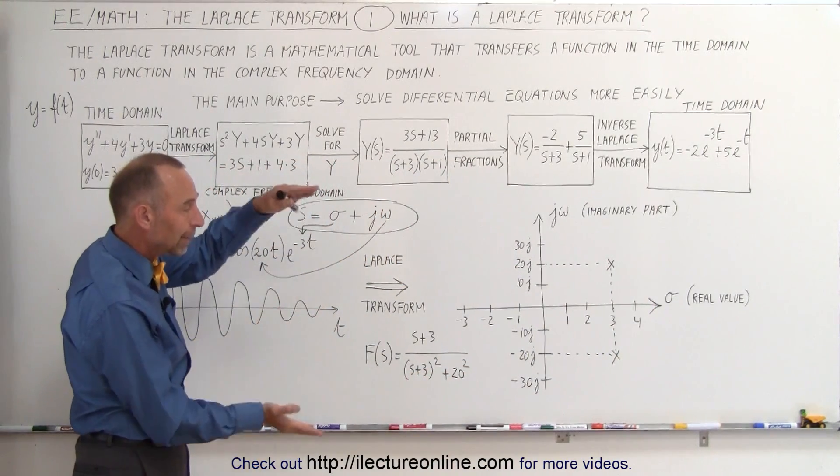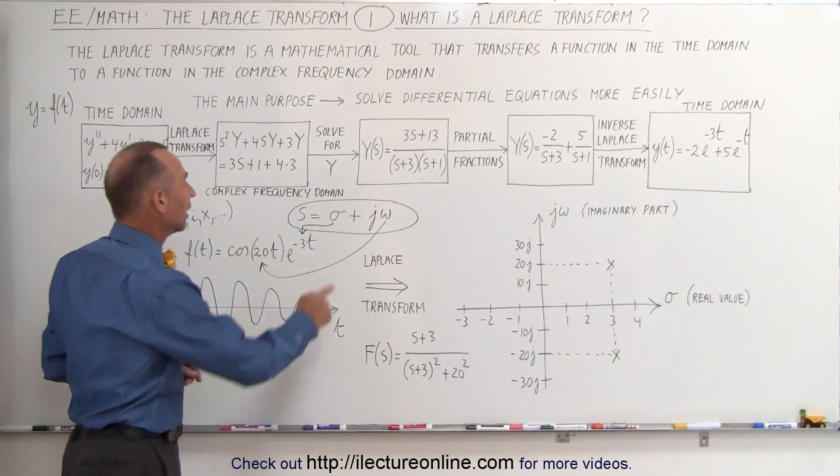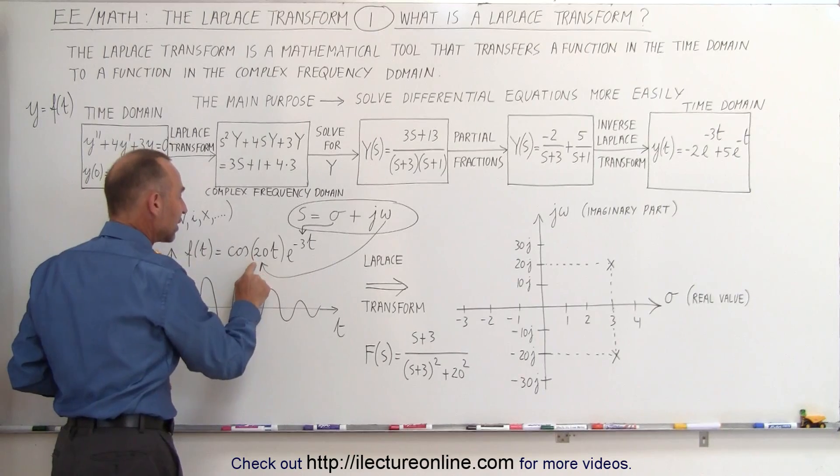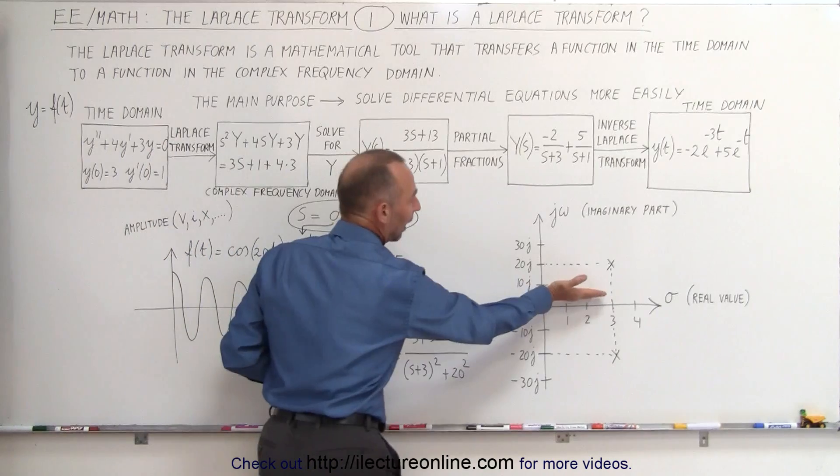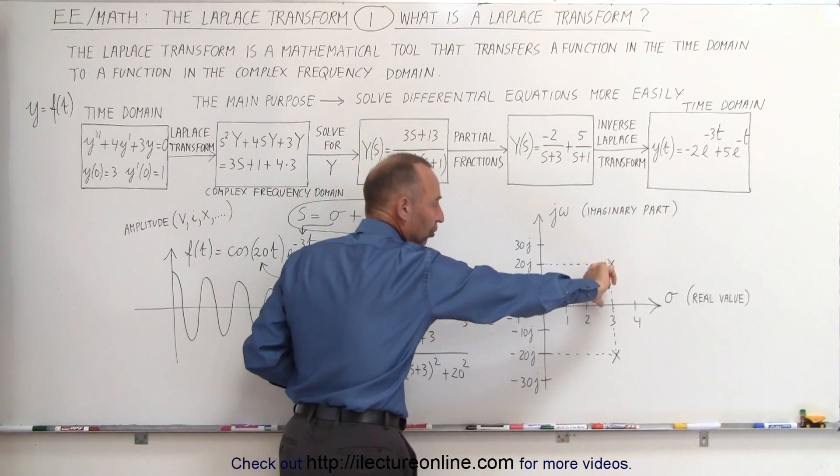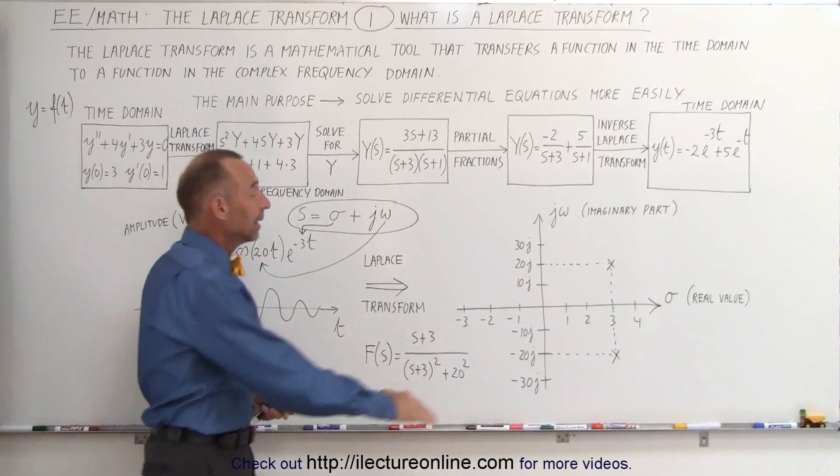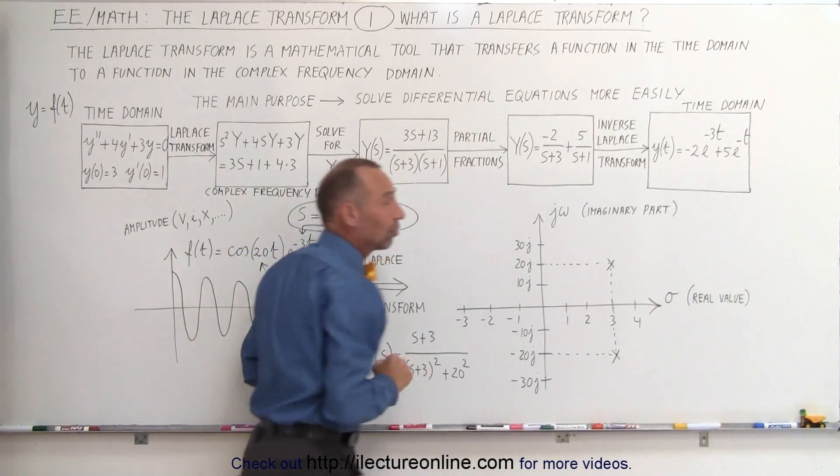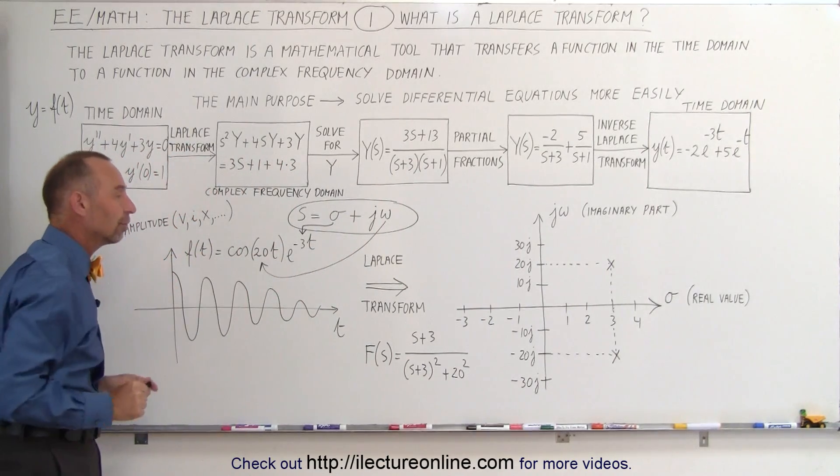And then where they're placed relative to the real axis right here in the imaginary part, that's associated with the actual frequency of oscillation of the function. Notice that the larger the frequency, the higher the x's would be drawn. The smaller the frequency, the closer they would be to the real axis. And of course, if there's no frequency at all, then the x's would be on the real axis as well. There's no oscillation of frequency with respect to time of the original function.